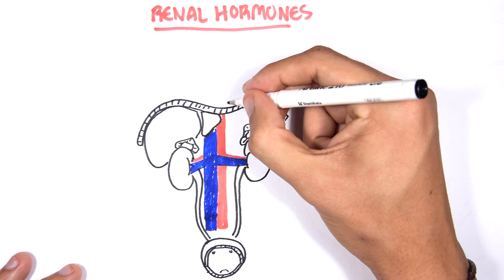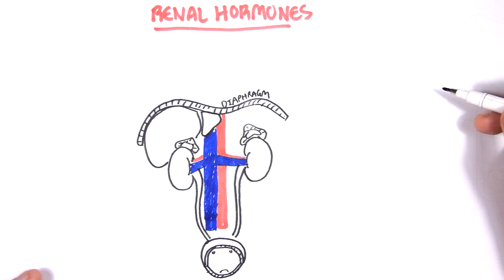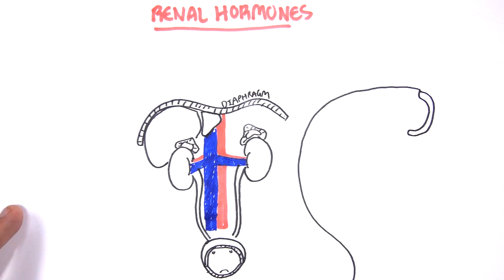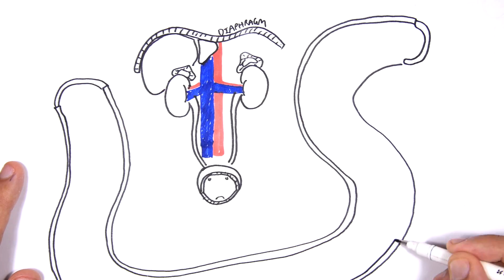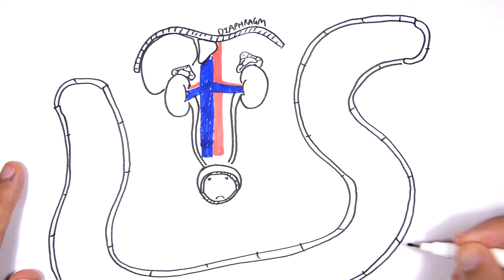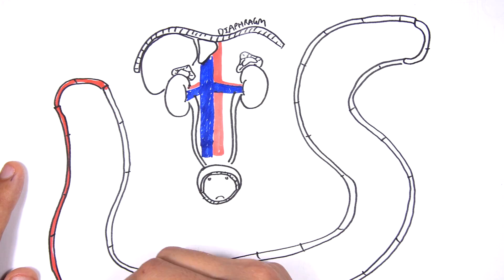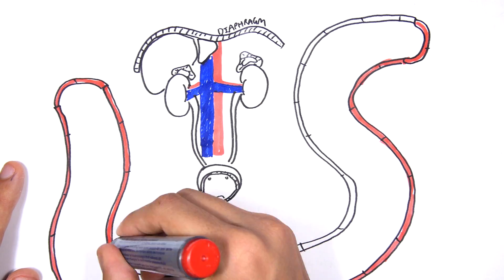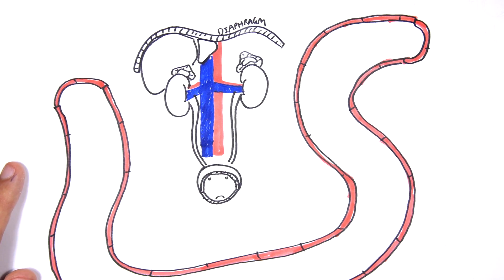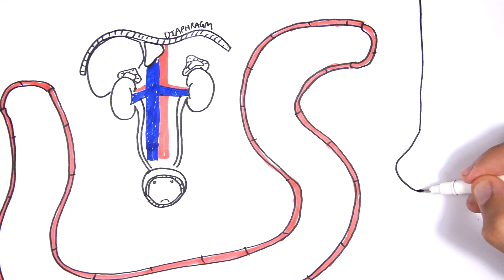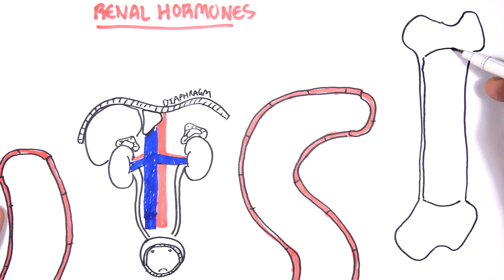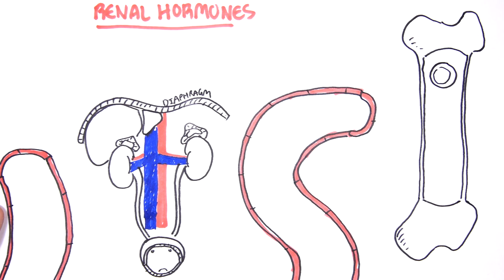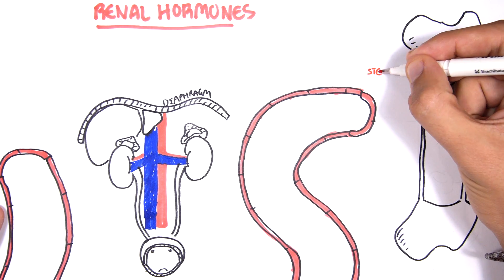Here I'm drawing just a blood vessel which will represent the blood, essentially what we find in the blood. And here I'm drawing the bone. Within the bone, looking at the bone marrow, we have stem cells which can give rise to red blood cells through a process.